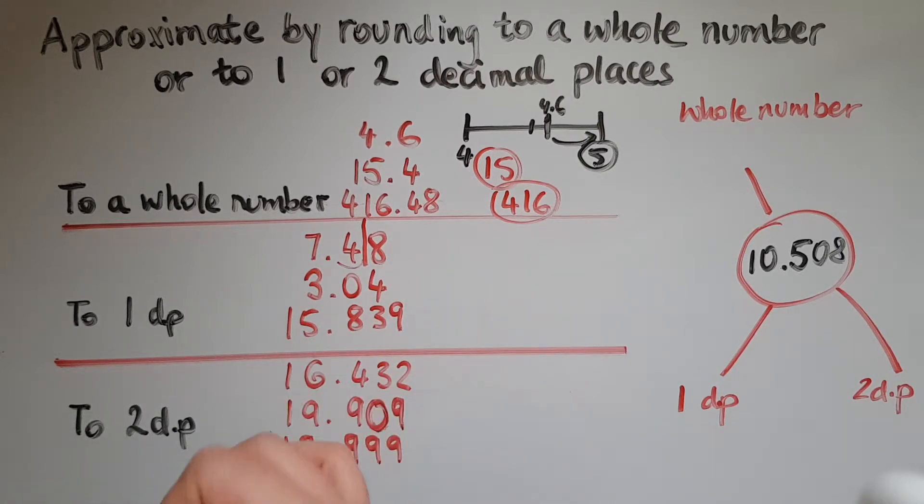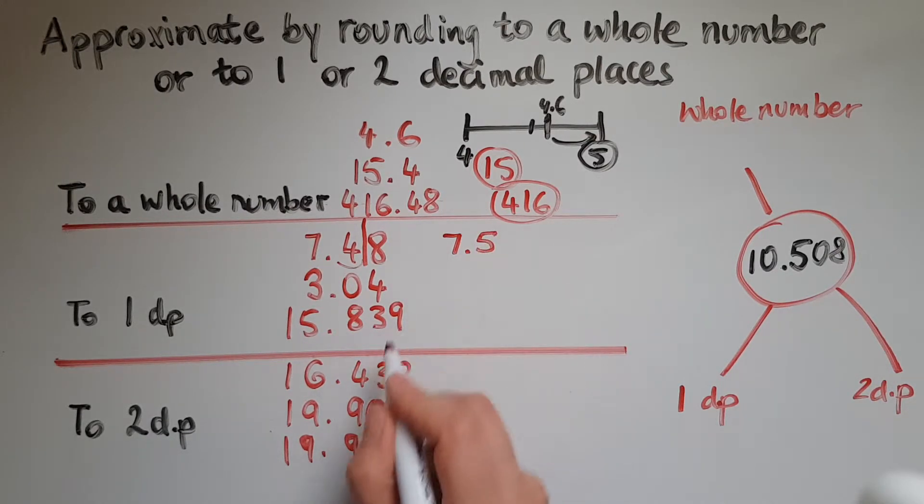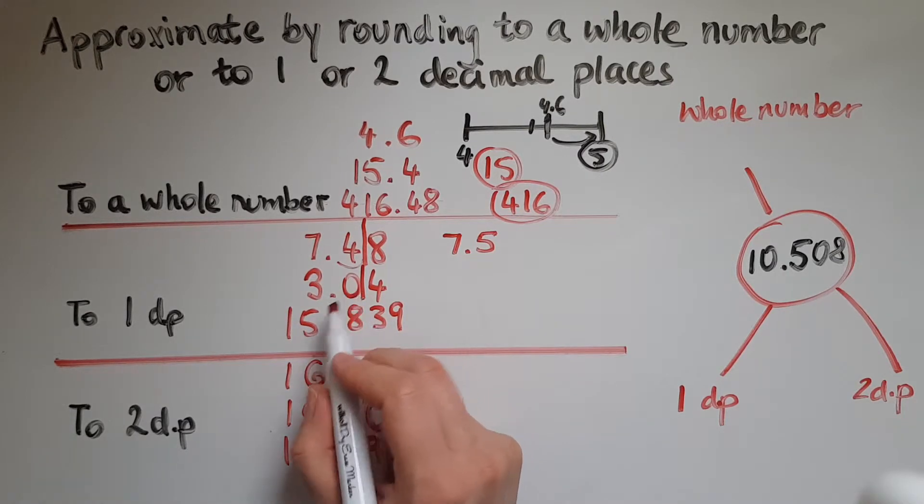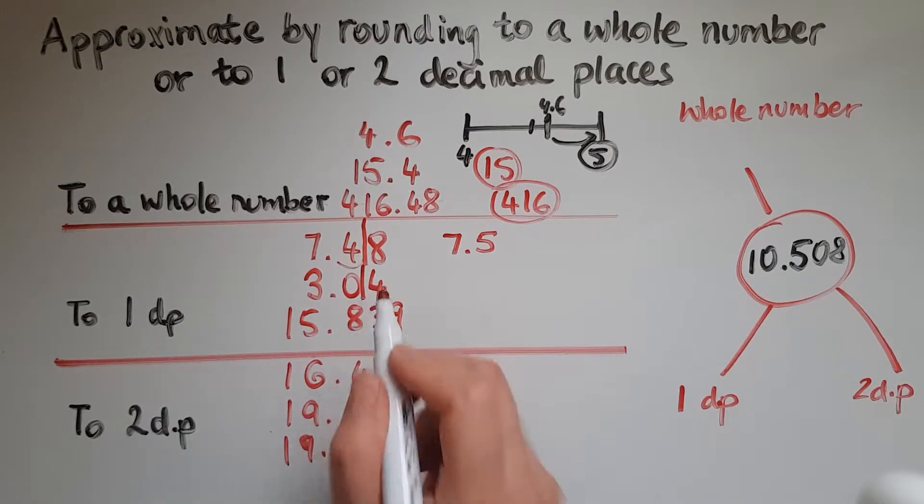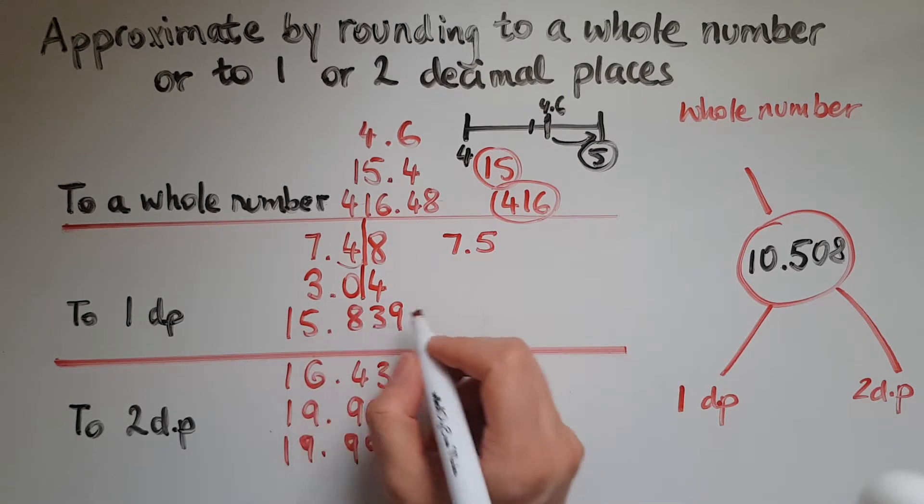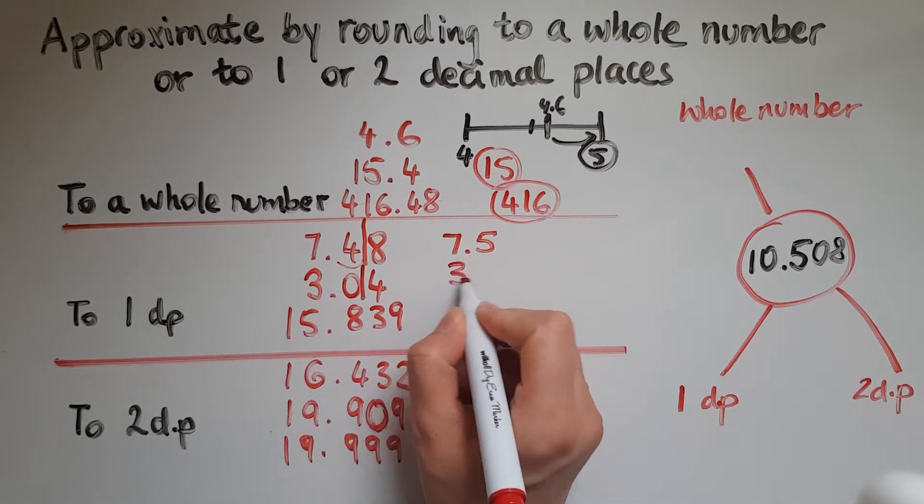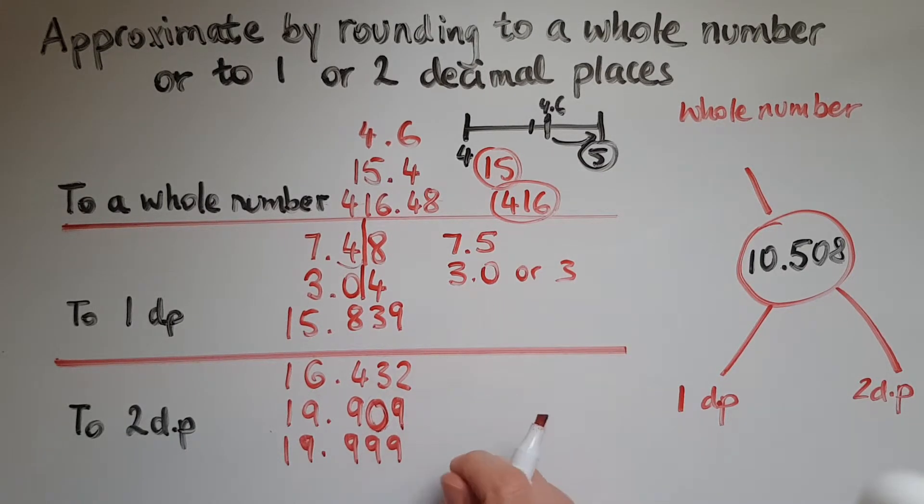And we've said if it's 5, 6, 7, 8 or 9, then we round up. So this goes to 7.5. Now again, I need to cut this off here. So do I have 3.0 or 3.1? I'll go with 3.0 because 4 means rounding down. So I can have this as 3.0 or just 3.